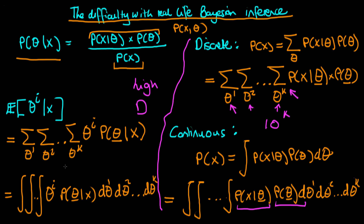Perhaps these two expressions needed to work out the posterior mean aren't quite as pathological as computing the denominator term. They're less pathological because typically the posterior is less concentrated than the likelihood, meaning a less tiny area of parameter space contributes to the expectation of theta. But nonetheless, the high dimensionality — summing in the discrete case or integrating in the continuous case — means these expressions are difficult or impossible to work out exactly in practice.